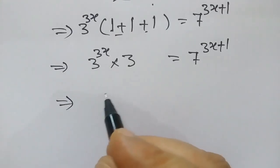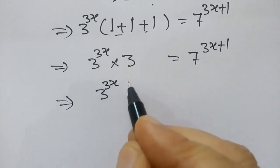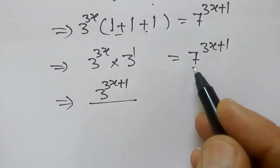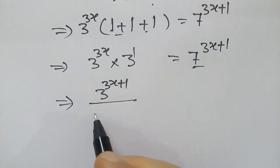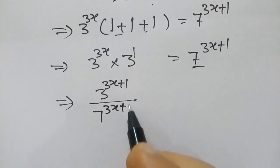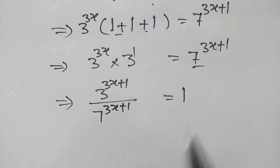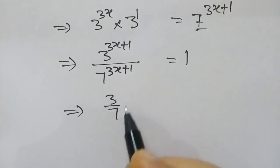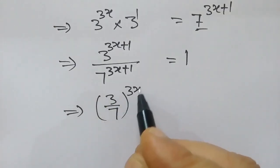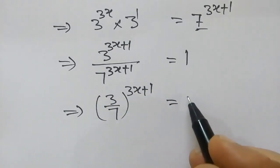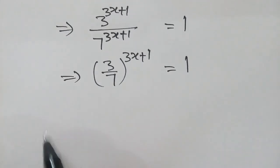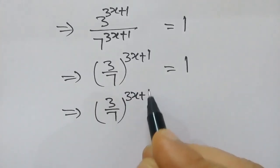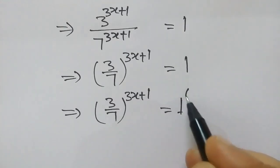We can write this as 3 to the power 3x plus 1 over 7 to the power 3x plus 1 is equal to 1. Now, 3 over 7 to the power 3x plus 1 is equal to 1, which we can write as 3 over 7 to the power 3x plus 1 is equal to 1 to the power 0.